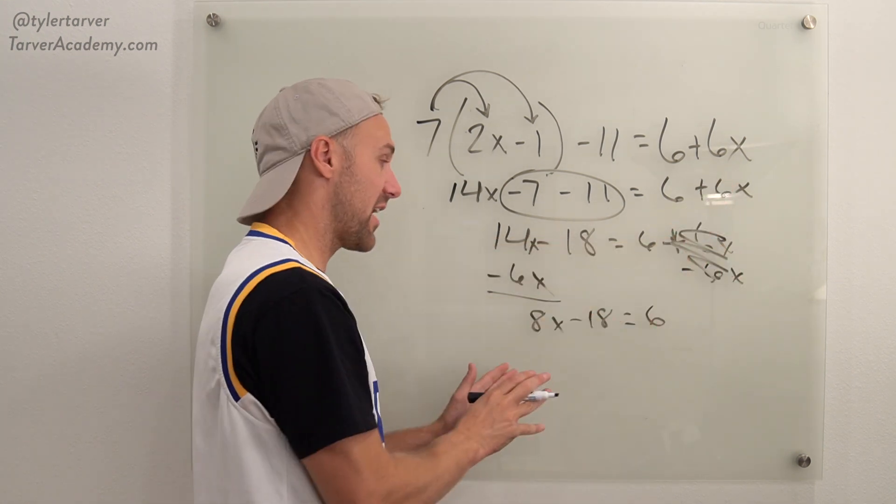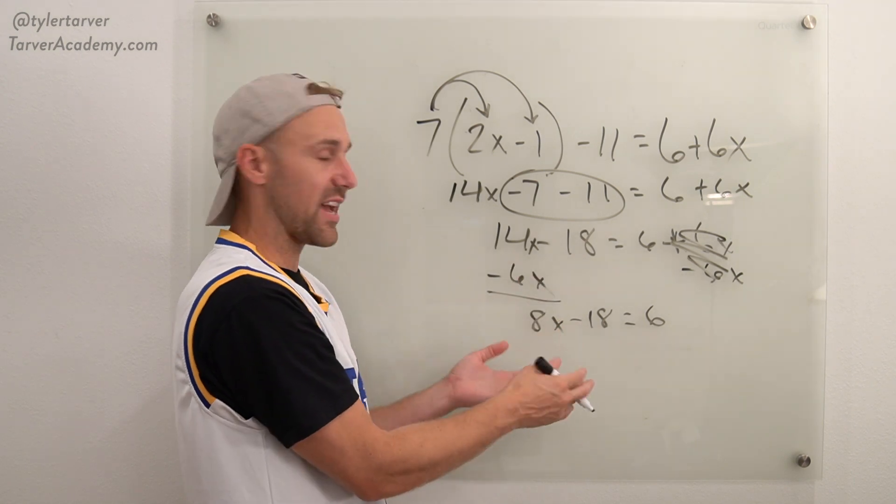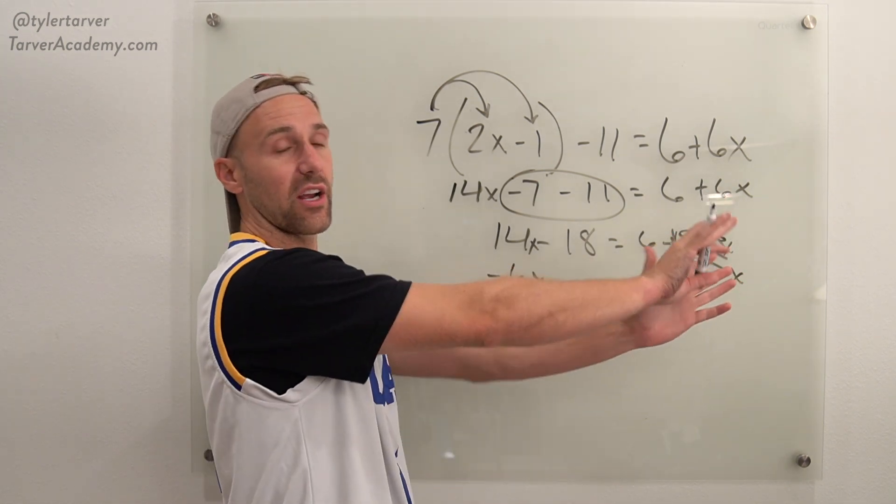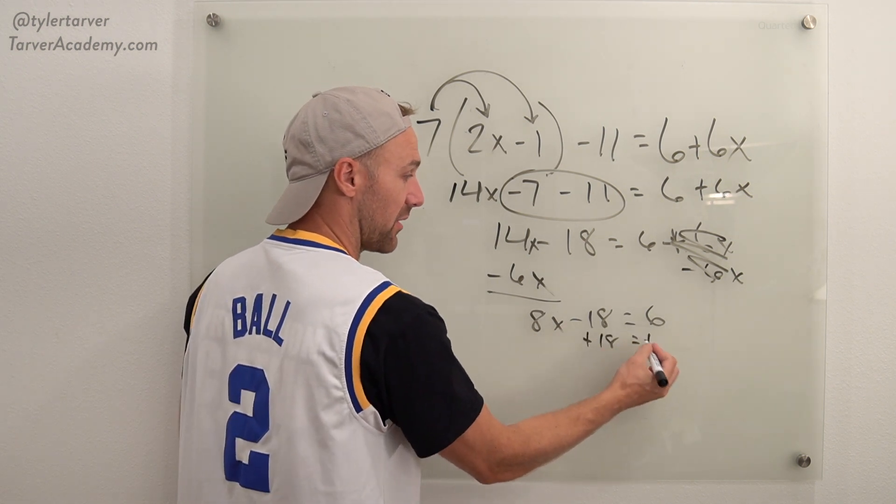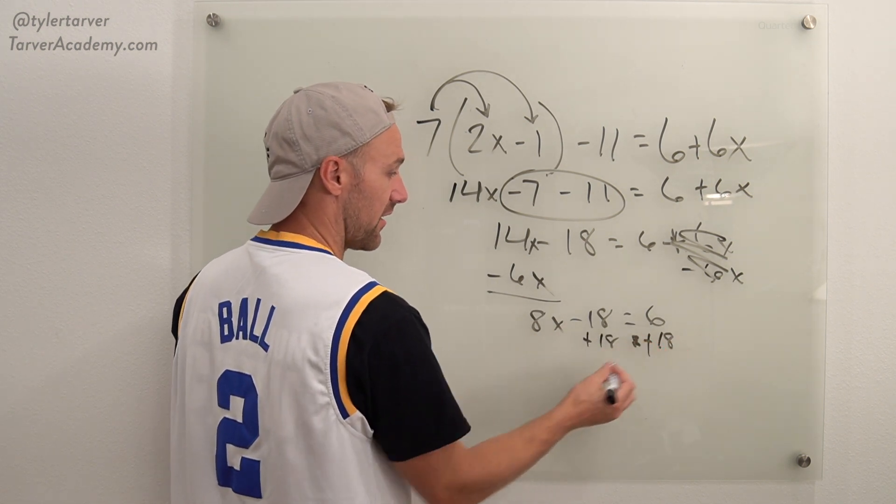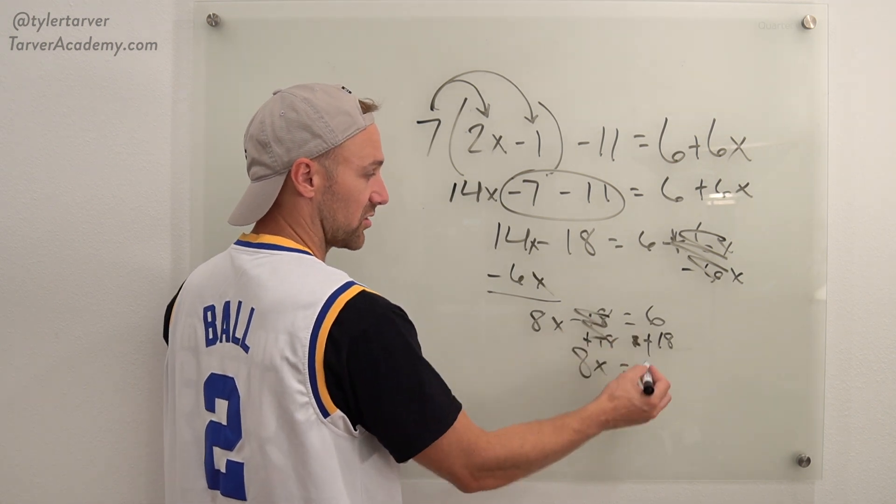Now I've got to get my numbers over there. I've got my x over here. He's the only x over here. So all my numbers got to go over there. So opposite of subtracting 18, we're going to add 18 to both sides. That's going to cancel out. We've got 8x equals 24.